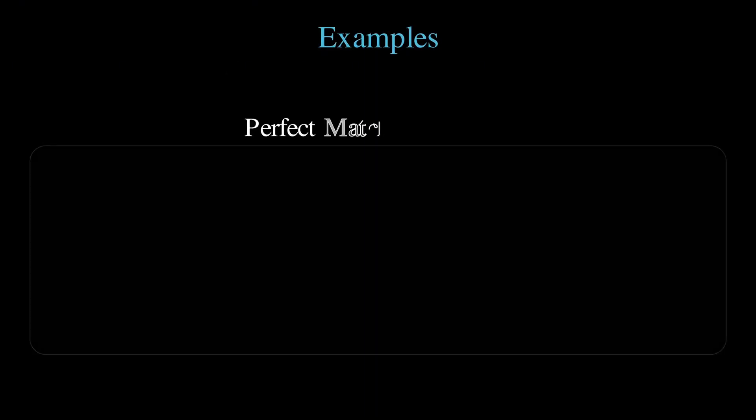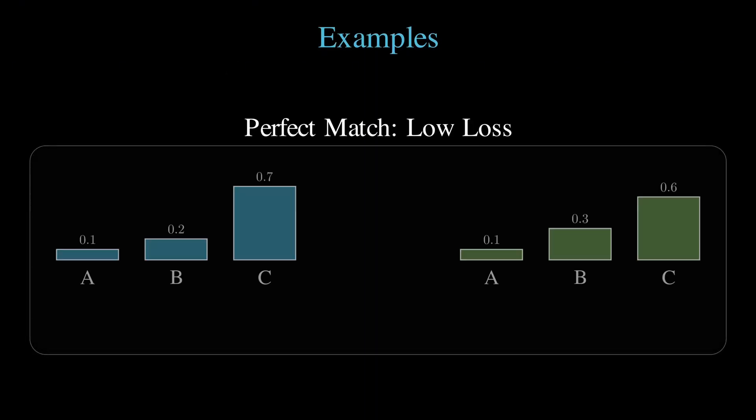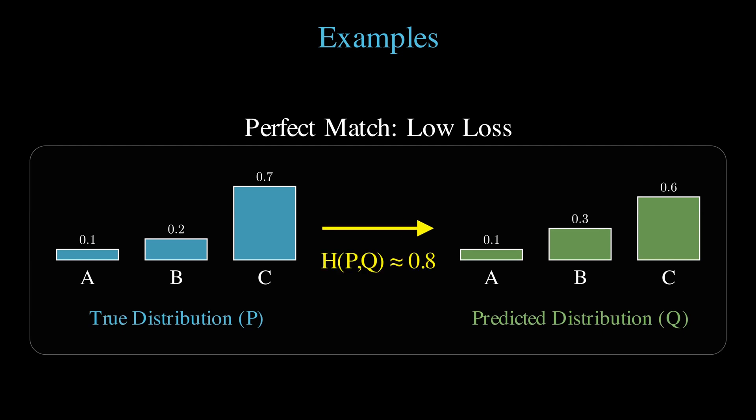Let's break this down with some examples. If our model makes a perfect prediction, giving 100% to the correct class, the cross-entropy would be near zero.